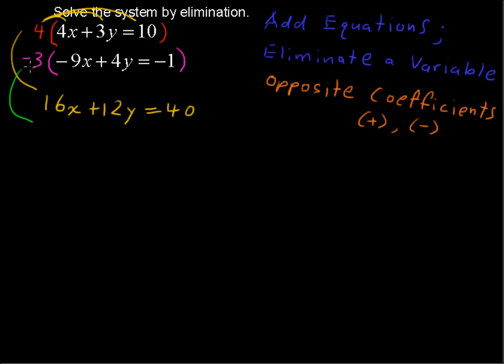The second equation: negative 3 times negative 9 is positive 27, and that's multiplied by x. Negative 3 times positive 4 is the negative 12y that we were looking for. That's good. When we add these, these will drop out. And negative 3 times negative 1 is positive 3.